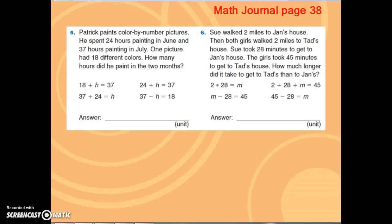On page 38, you have some multiple choice options. So Patrick paints color by number pictures. He spent 24 hours painting in June, and 37 hours painting in July. One picture had 18 different colors. How many hours did he paint in the two months?